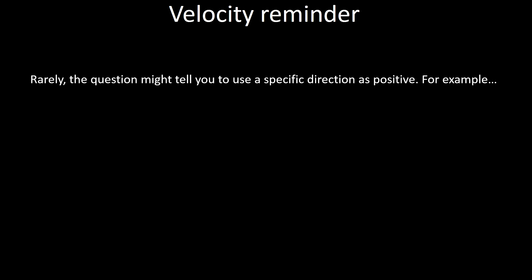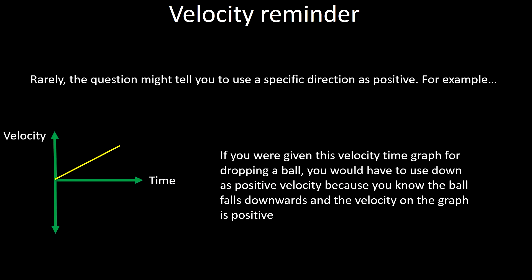There are rare occasions where a question will tell you specifically which direction positive velocity is. For example, if you're given a velocity-time graph for a ball being dropped, and the velocity on the graph is positive and increasing in size, the ball is moving faster and faster downwards — so you know that downwards must be positive in this problem. The statement that the ball is dropped and the velocity-time graph together tell you that down must be the positive direction of velocity.